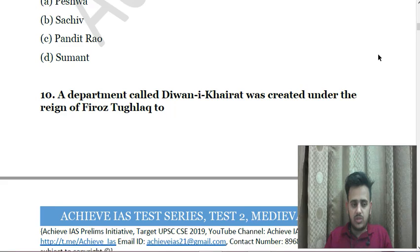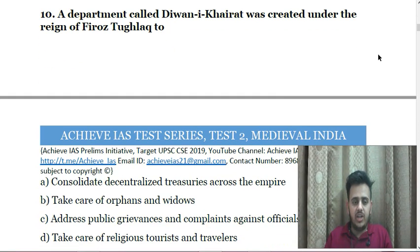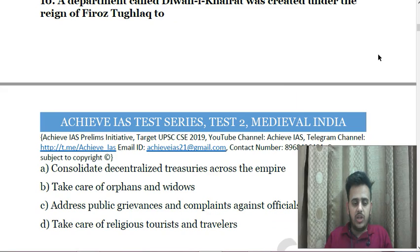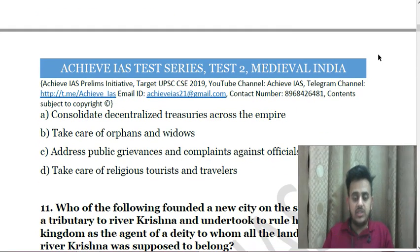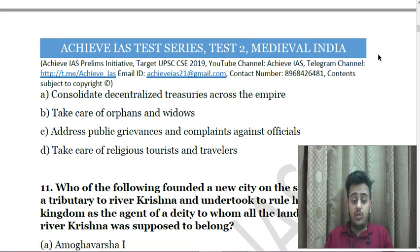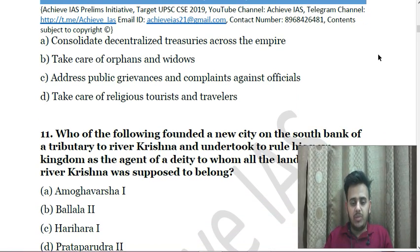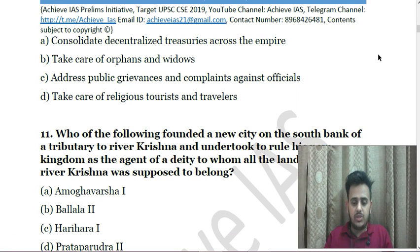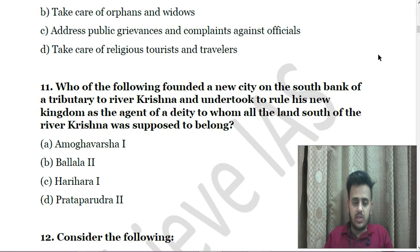Next: A department called Diwan-e-Khairat was created under the reign of Firuz Shah Tughlaq to — A. Consolidate decentralized treasuries across the empire, B. Take care of orphans and widows, C. Address public grievances and complaints against officials, D. Take care of religious tourists and travelers. This is your 10th question.